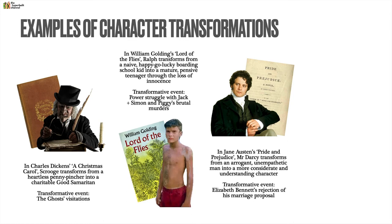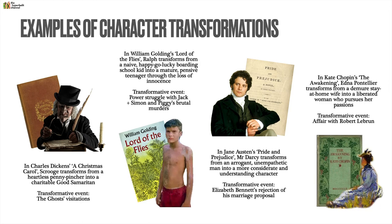In Jane Austen's Pride and Prejudice, Mr. Darcy transforms from an arrogant, unempathetic man into a more considerate and understanding character after Elizabeth Bennet rejects his marriage proposal. And in Kate Chopin's The Awakening, the protagonist Edna Pontellier transforms from a demure stay-at-home wife into a much more liberated woman who pursues her passions even at the expense of her life, with the transformative event being her affair with the younger Robert LeBrun.